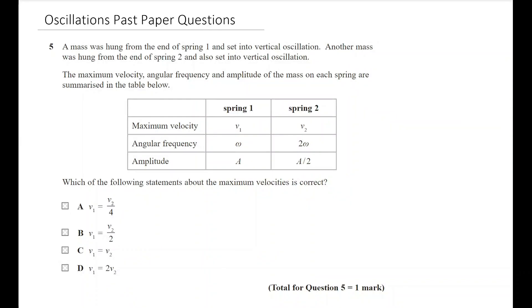Today I'm looking at some oscillations past paper questions — this was a request from one of my subscribers. I've chosen questions that are not long answer questions, because I did an example of a six-marker classic resonance example in my video on oscillations and resonance. This video is about using the rest of oscillations in some way, starting with multiple choice questions and then some calculations.